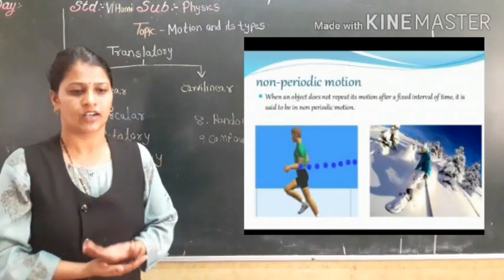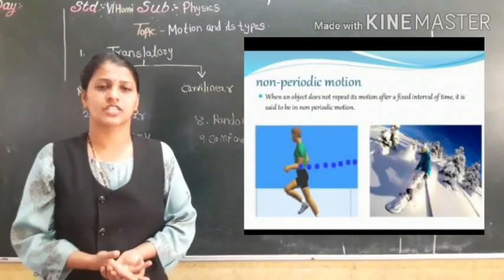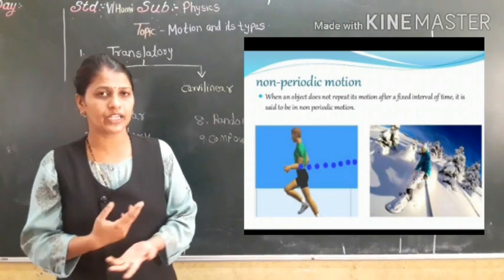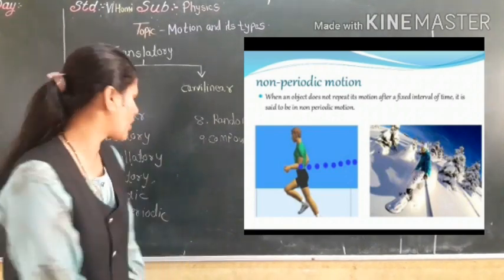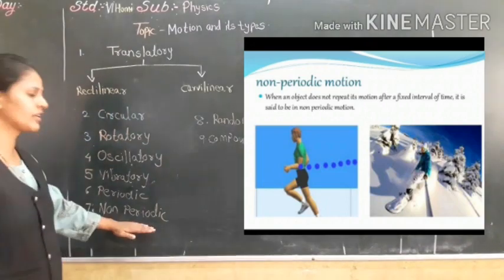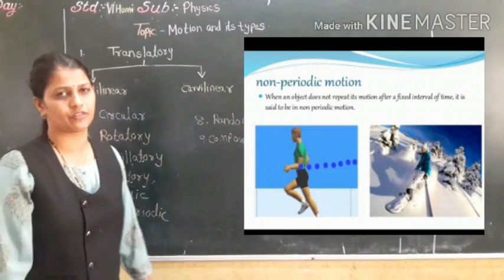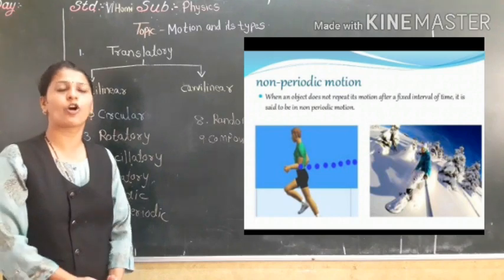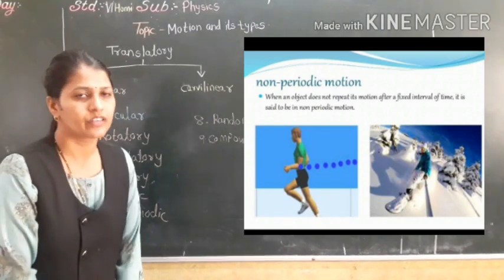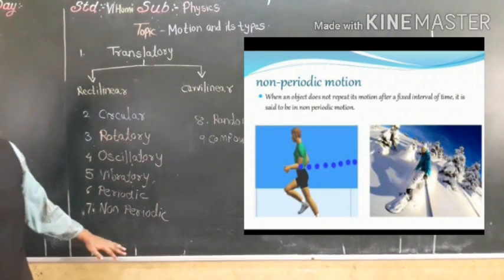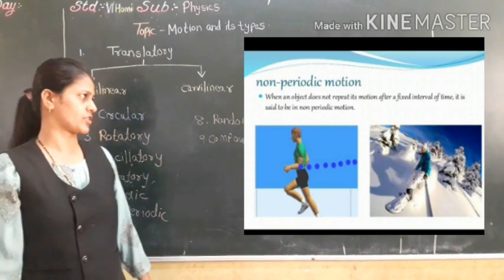Non-periodic motion means the motion which does not repeat after an equal interval of time. That is called non-periodic motion. For example, all natural calamities are examples of non-periodic motion.